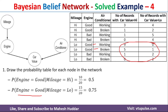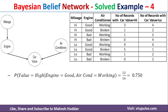Next is car value. Car value can be either high or low. It depends on both engine and air conditioner, each having two possibilities, so there are four conditions in total: engine good and AC working; engine good and AC broken; engine bad and AC working; engine bad and AC broken.